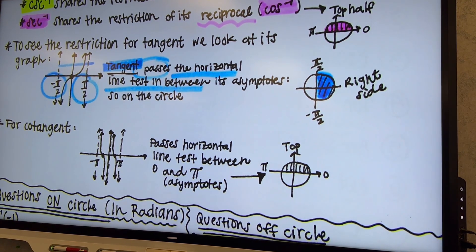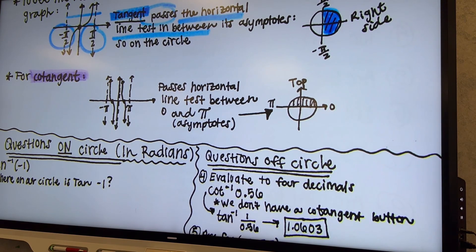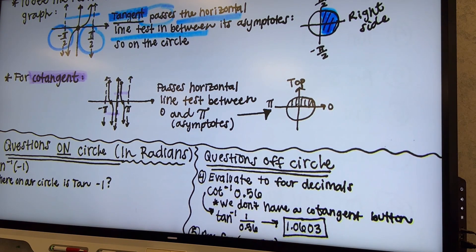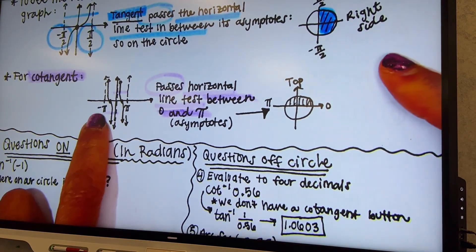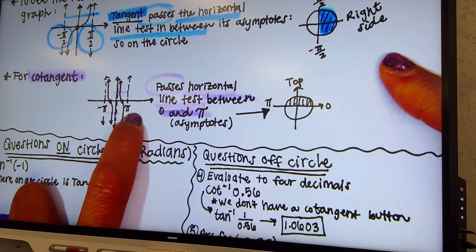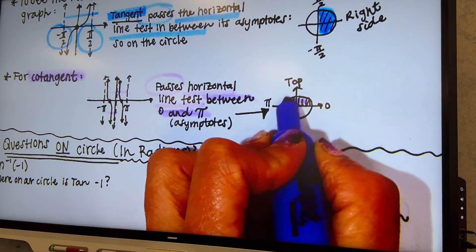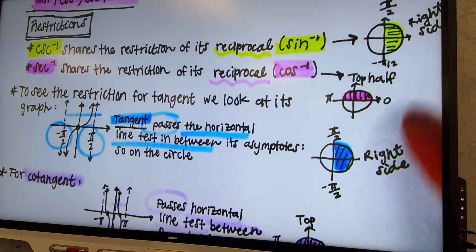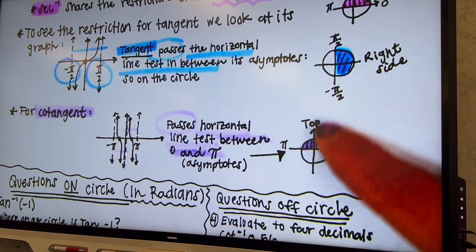For cotangent, it's the opposite of that. It follows the same logic, but its asymptotes are in different places. Cotangent passes the horizontal line test, but only in between its asymptotes — between zero and pi. We use the positive cycle, so from zero to pi. So cotangent is restricted to the top half, just like cosine and secant are. So to summarize: sine, cosecant, and tangent are restricted to the right-hand side of the unit circle. Cosine, secant, and cotangent are restricted to the top half.